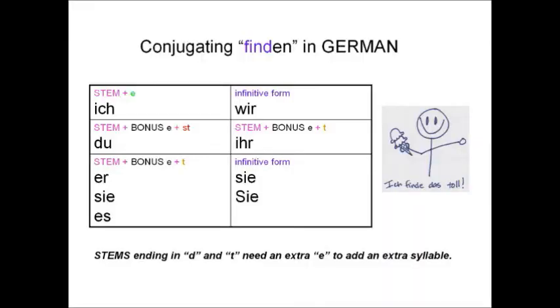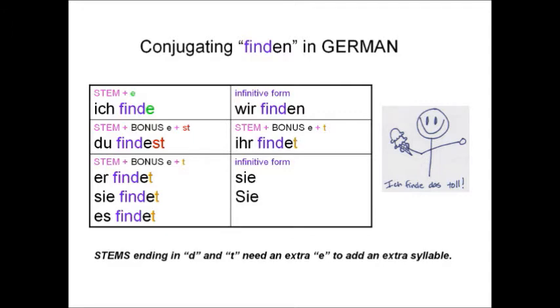Let's try another one — you try this one. This is the verb finden, which means to find. See if you can conjugate this weak verb that is irregular because it ends in that D. Ich finde. Du findest. Er findet. Wir finden. Ihr findet. Sie finden.